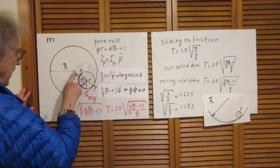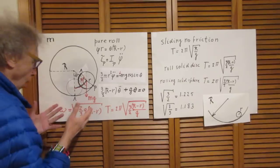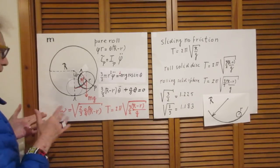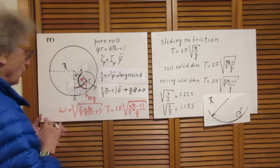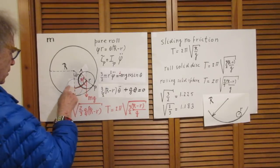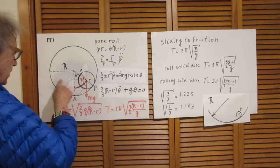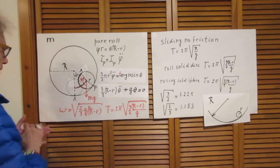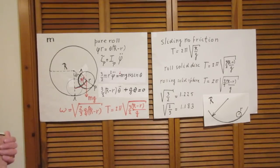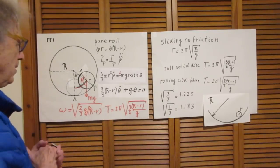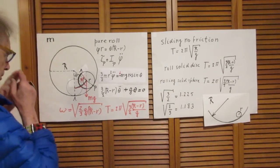This disk can be rolling back and forth. If this angle theta here is a small angle, then we get small angle approximations, and the motion of this rolling disk is simple harmonic motion. The question is, what is the angular frequency or the period of that motion?